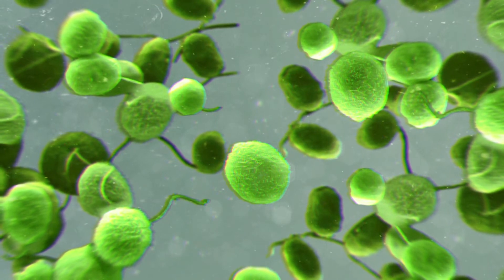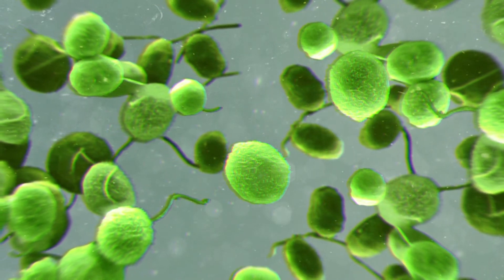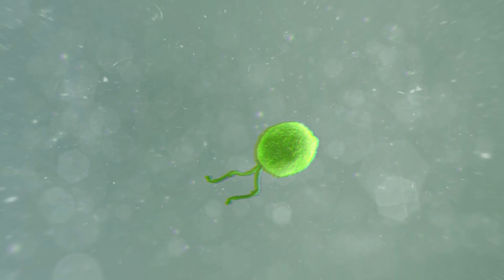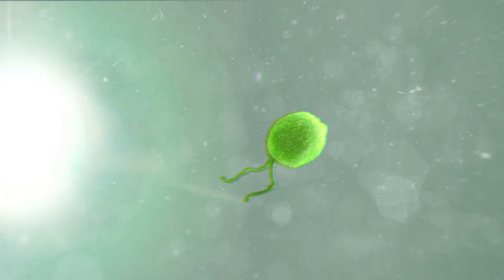pond scum is made up of trillions upon trillions of microscopic organisms known as green algae. Like most life on Earth, these organisms rely on sunlight for energy. What's more, they can actually detect and move towards sunlight even though they do not possess eyes or brains.